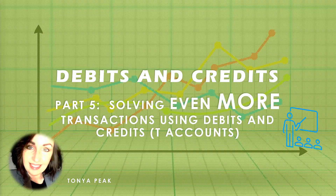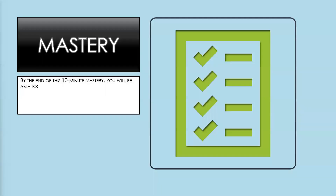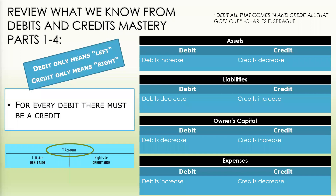Hello, and welcome to 10-Minute Mastery. In this session, we will review debits and credits. This is part five: solving even more transactions using debits and credits and T accounts. By the end of this 10-Minute Mastery, you will be able to solve transactions with the use of T accounts while applying the concepts of debits and credits in accounting. Let's review what we know from the debits and credits mastery videos in parts one through four — this one is part five.